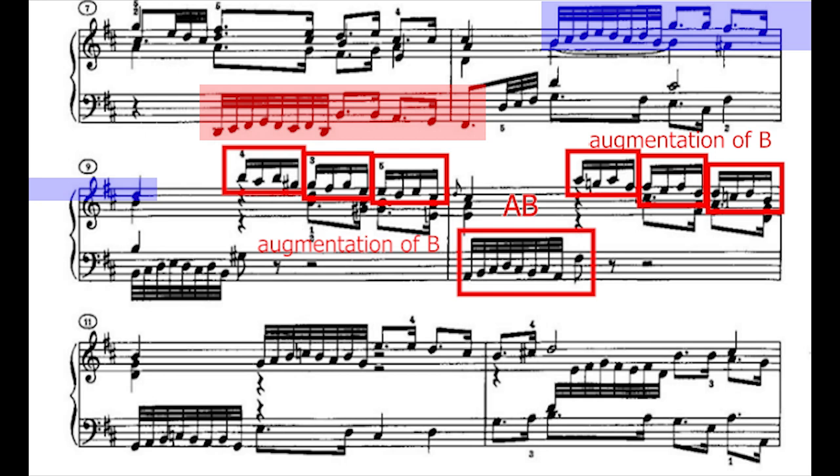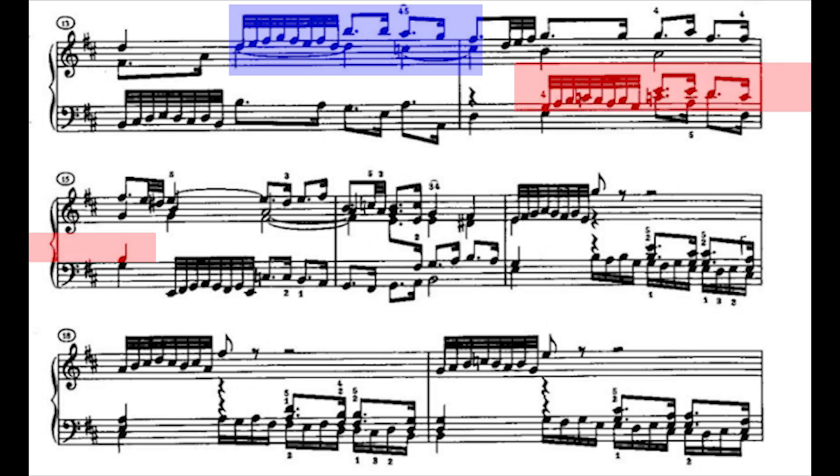After which, a group of entries in G starts from measures eleven to fourteen in a subject-answer-answer-subject order. It is followed by an isolated entry in E minor at measure fifteen, leading to a full cadence in the same key at measure seventeen.